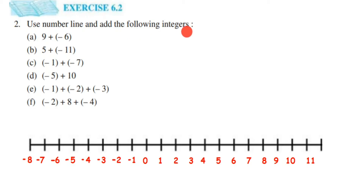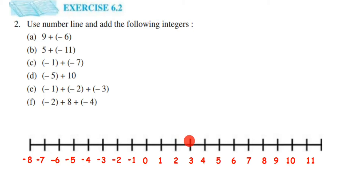The first one is 9 plus minus 6. So here I have already taken a number line. 0 is here. On the right hand side we have positive integers, on the left hand side we have negative integers. Whenever we are adding a number we move towards the right hand side. Whenever we subtract or add a negative integer we go towards the left hand side.